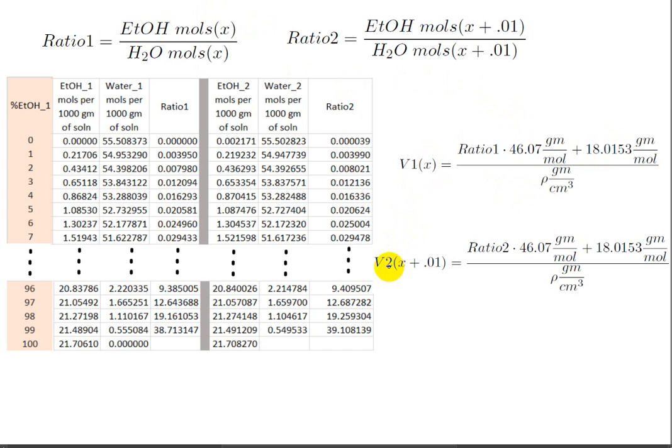Then in V2, we'll have V2 is going to be x, but now x is still 1%, but it's going to be plus 0.01, so it'll be V2 at 1.01%. That's going to be ratio 2, where we use the x plus 0.01, ratio 2 times the molecular weight of ethanol plus the molecular weight of water divided by rho.